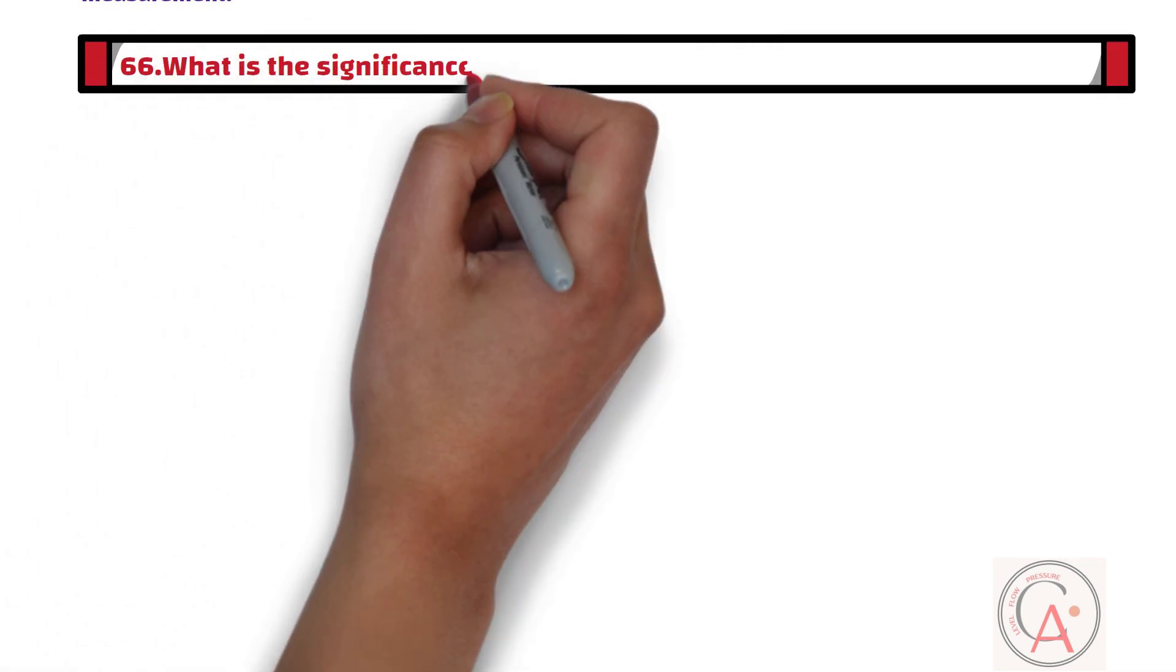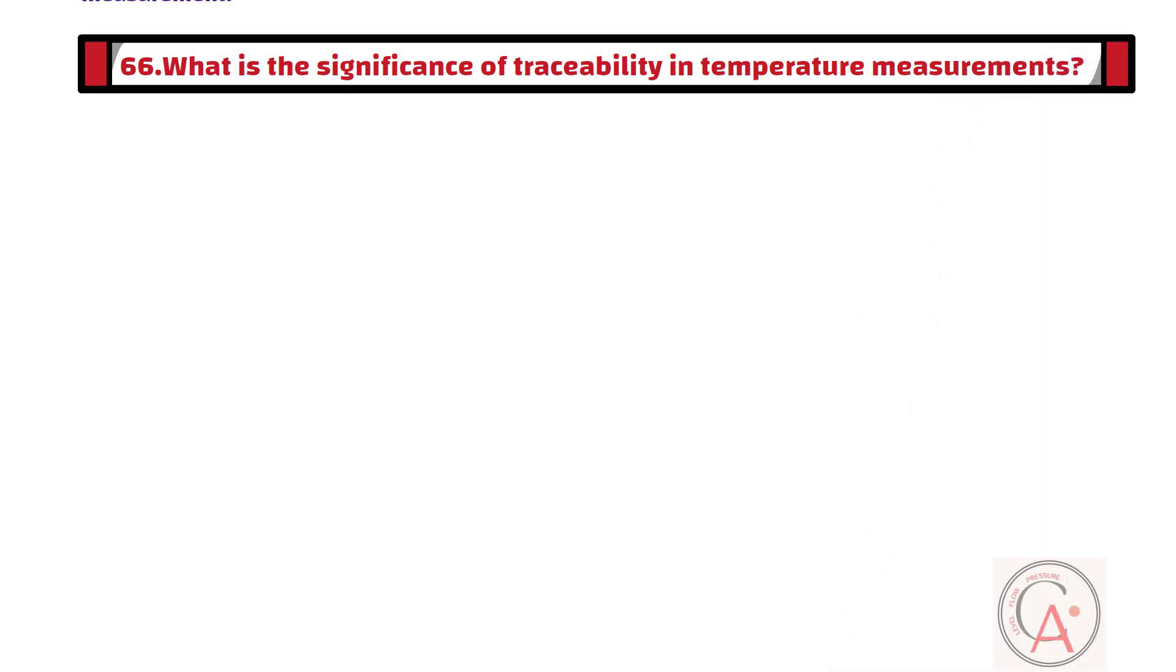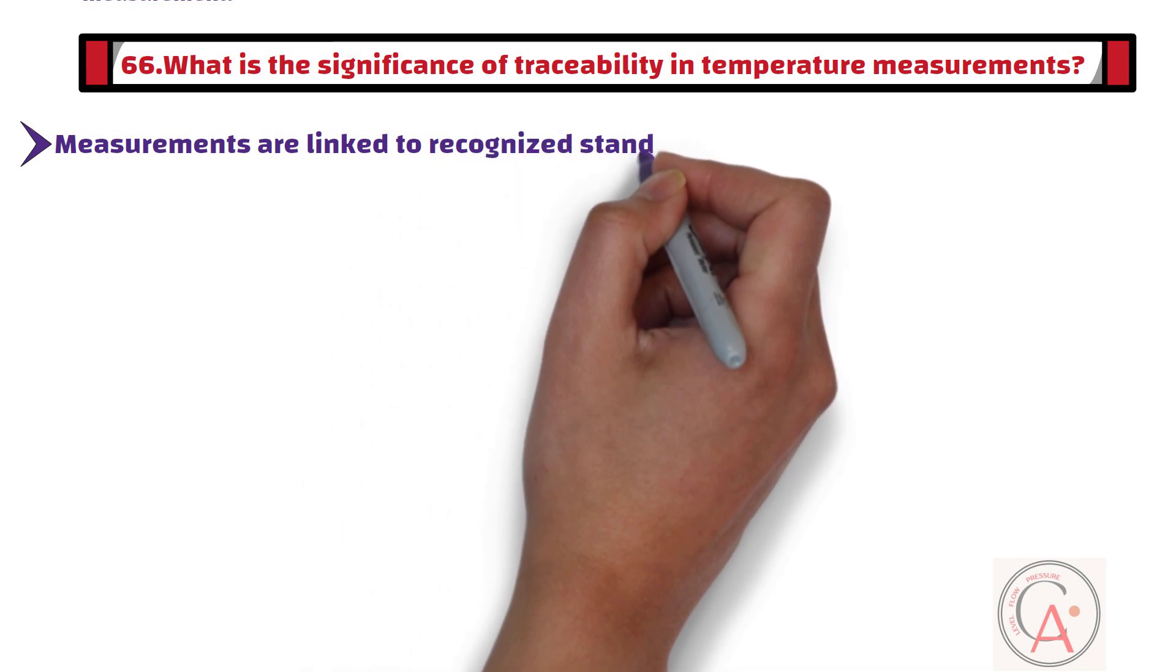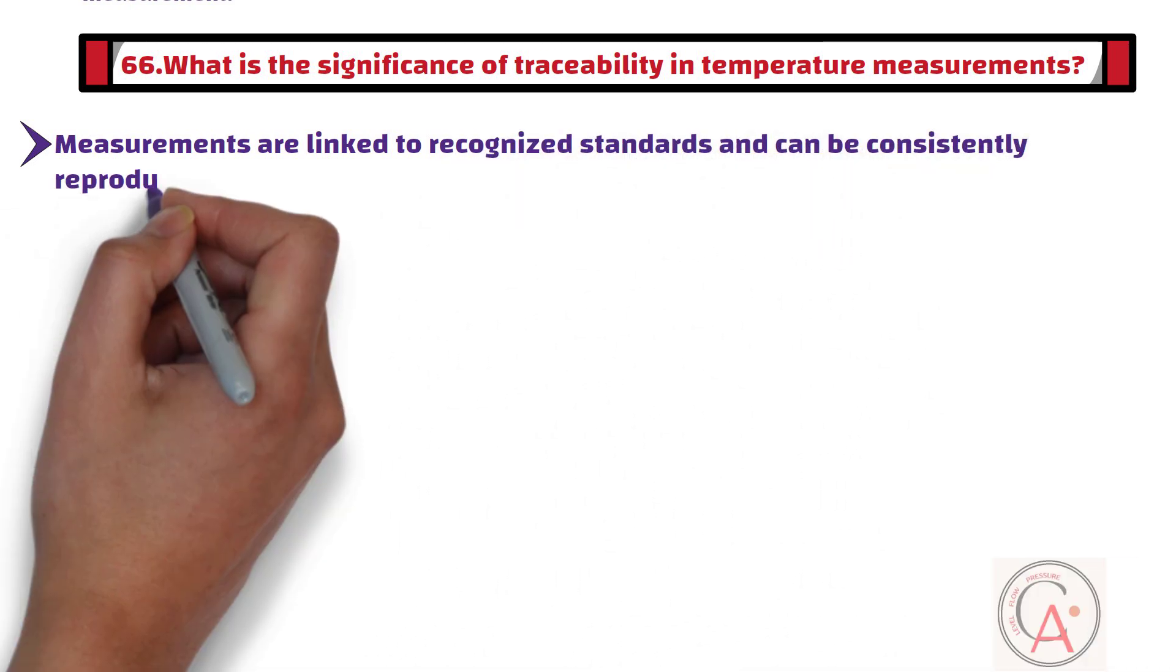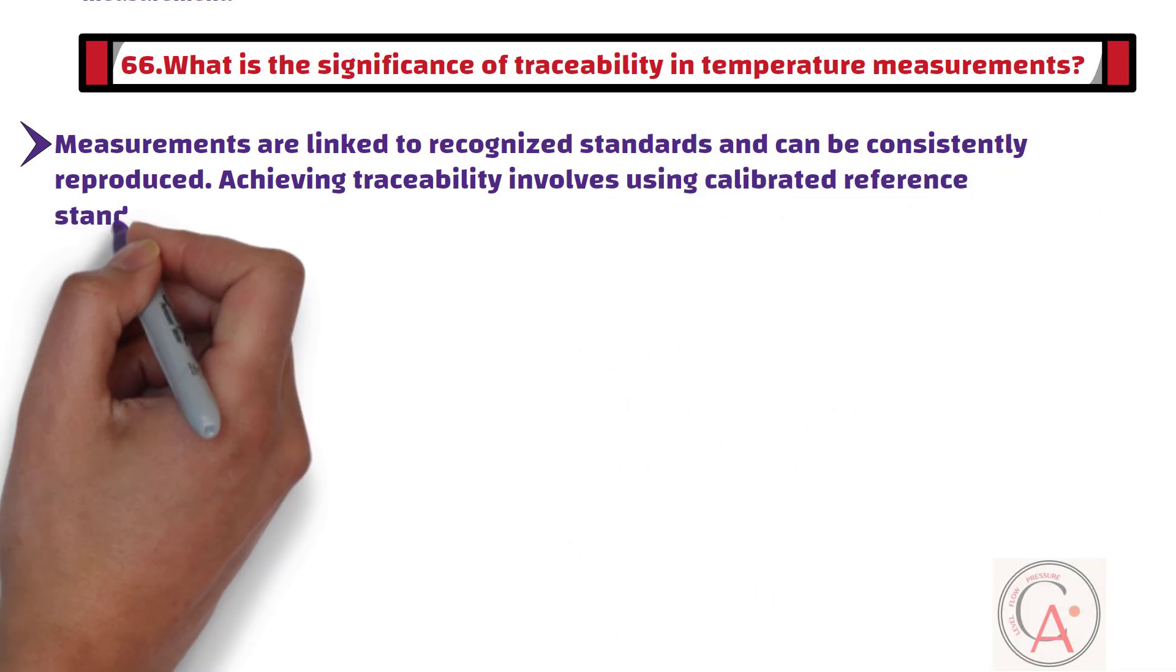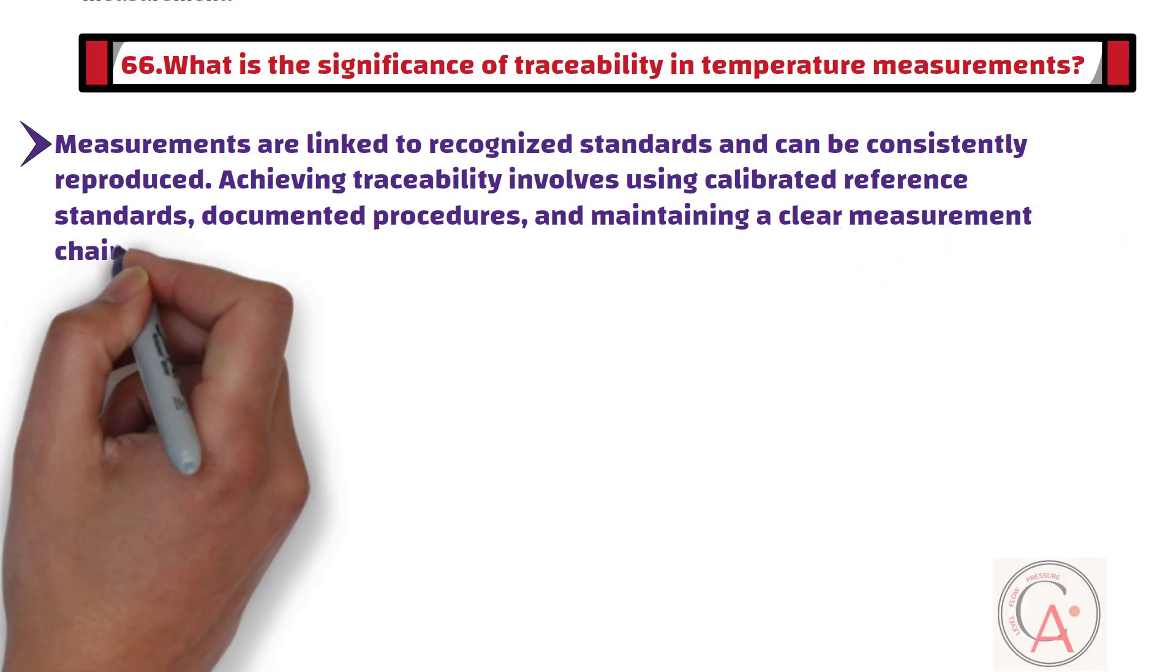Question number 66: What is the significance of traceability in temperature measurements, and how is it achieved? Traceability ensures that measurements are linked to recognized standards and can be consistently reproduced. Achieving traceability involves using calibrated reference standards, documented procedures, and maintaining a clear measurement chain from the sensor to the standard reference.